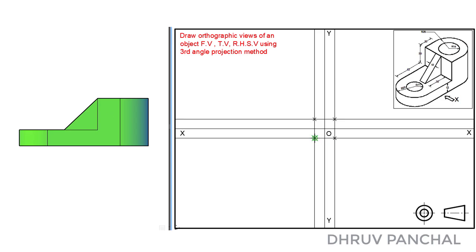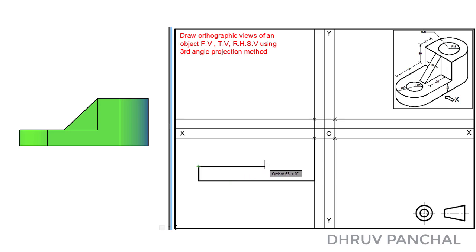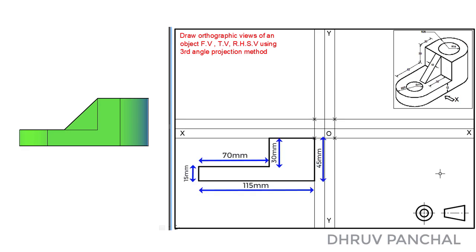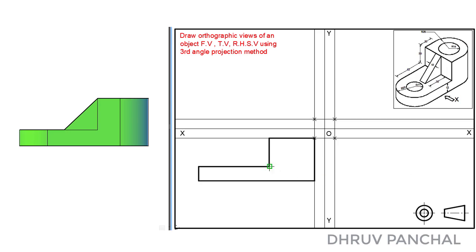For drawing the front view, our reference point is located at the top right corner. Let us find that point in the 3D object. From that point, draw a vertical line of 45 mm, horizontal line of 115 mm, vertical line of 15 mm, horizontal line of 70 mm, vertical line of 30 mm, and horizontal line of 45 mm, as shown. Let me show you the dimensions so that you can draw up to here. Now, from this point, mark a point at a distance of 30 mm and connect these two points with the help of a line, as shown.